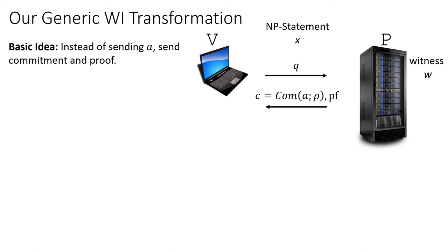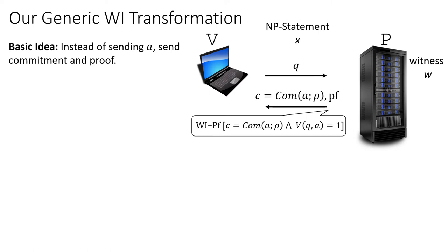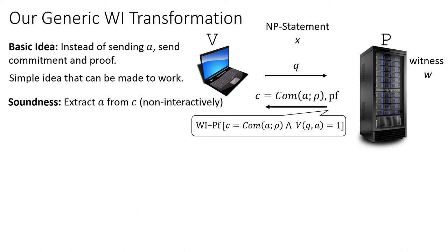Instead of sending A, we send a commitment to A using some randomness ρ, and an additional proof. This is a witness indistinguishable proof that C is a valid commitment to a value A, and this value A satisfies the verifier's predicate with the given query q. We want a witness indistinguishable proof of this statement, and this straightforward idea can indeed be made to work by taking care of the subtleties that arise.